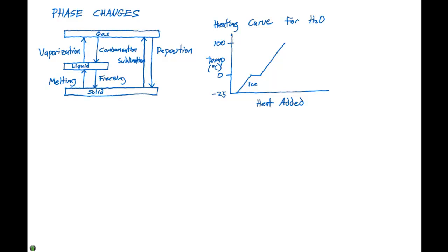But then we also see a flat line here where we have to add a lot more heat before the temperature is going to change. And then we see a bump like this.